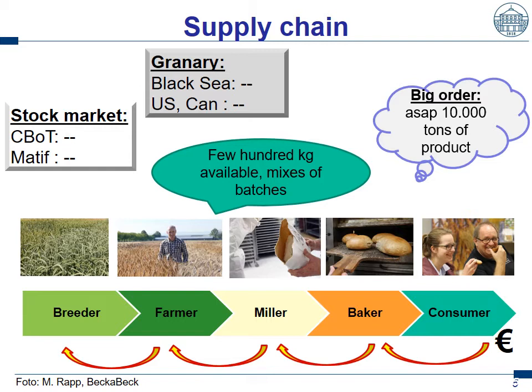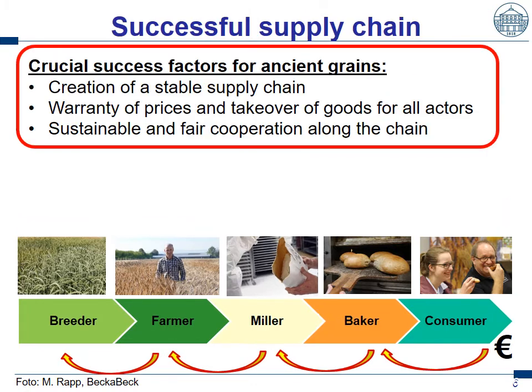Then let's go to the stock market, where we can easily get wheat at the Chicago Board of Trade or Matif in Paris. We can get wheat, but we cannot get einkorn, emmer, or spelt. Thus we cannot realize ad hoc large amounts of products with einkorn, emmer, or spelt. The crucial success factor for ancient grain is the creation of a stable supply chain.